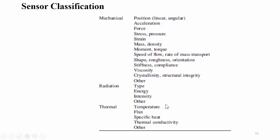Radiation-based sensors detect intensity and other related parameters. Thermal-based sensors include temperature detector sensors, flux detection sensors, specific heat detector sensors, and thermal conductivity-based sensors.